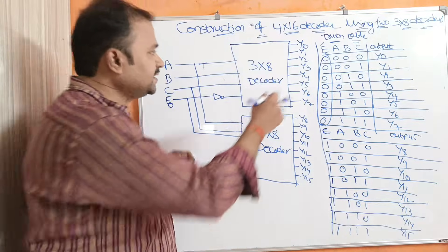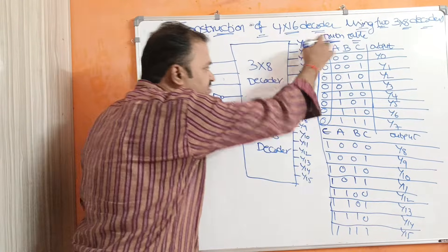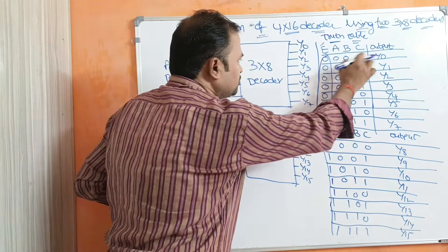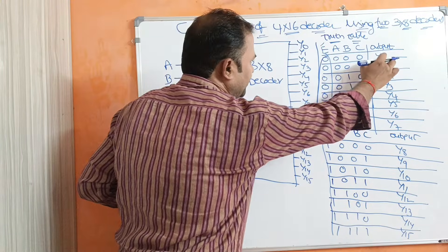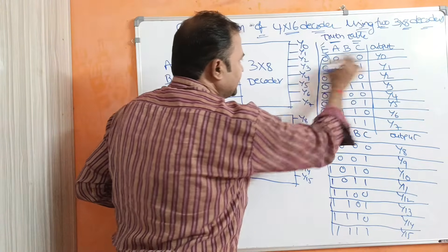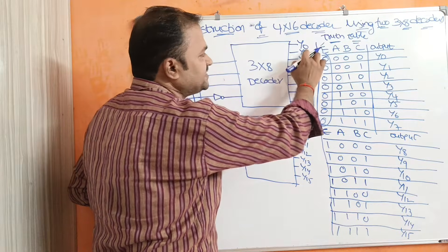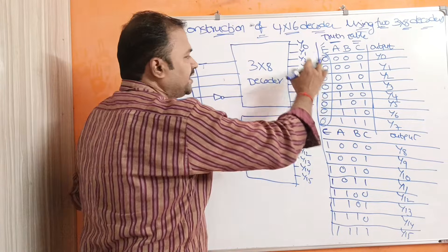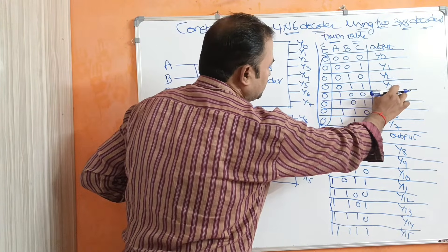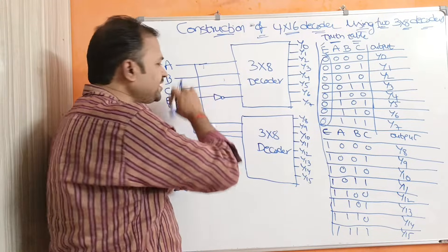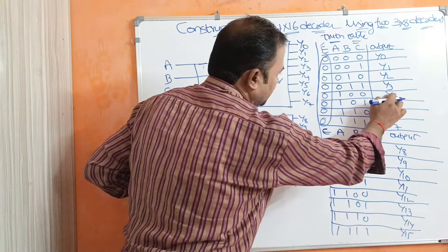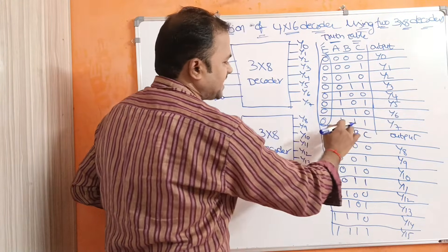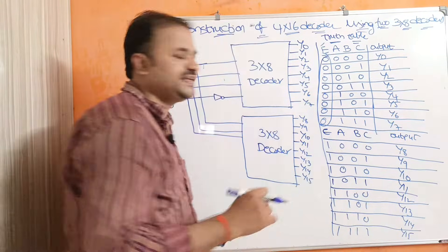For the first decoder, the enable input is 0. If the inputs A, B, C are 000, then the first output line Y0 is active. If the inputs are 001, then Y1 is active. If the inputs are 010, then Y2 is active. If the inputs are 011, then Y3 is active. For 100, Y4 is active; 101, Y5; 110, Y6; and when the input is 111, Y7 is active. So the first 3 by 8 decoder produces outputs Y0 through Y7.